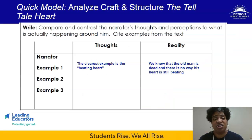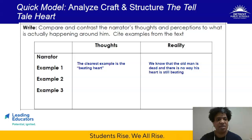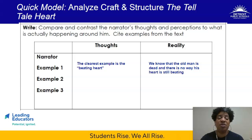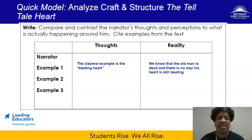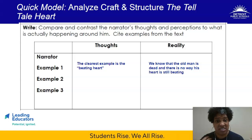The write section and the think section you can actually do in tandem with one another, because the write section helps you organize your thoughts and lays out very clearly this idea of compare and contrast. You're going to compare and contrast the narrator's thoughts and perceptions to what is actually happening around him by citing examples from the text. An example I've already provided: the clearest example is the beating heart. At the beginning, we know that the narrator is hearing the heartbeat of the old man — that's what he's telling us.